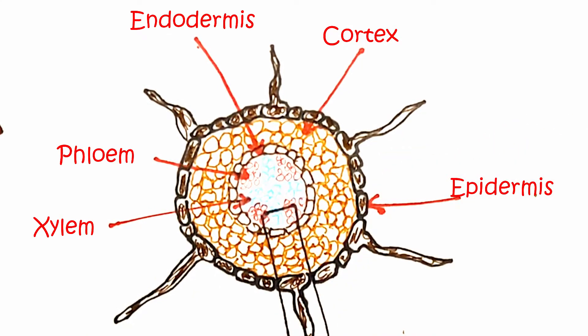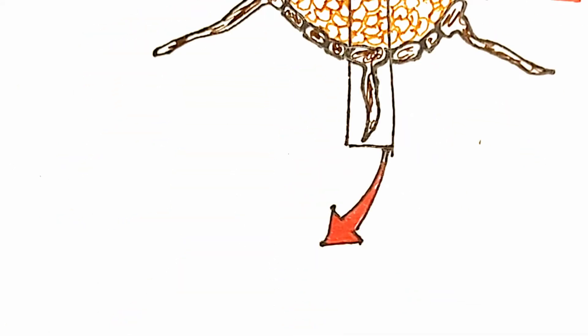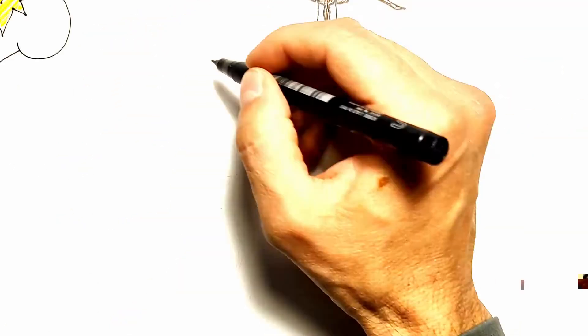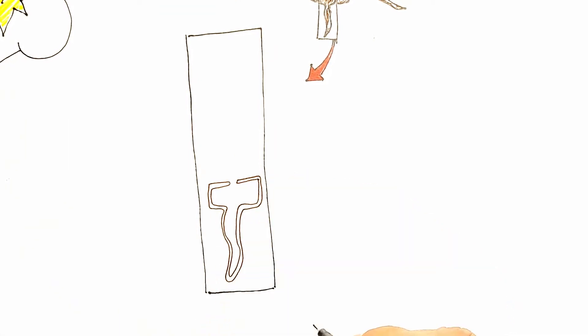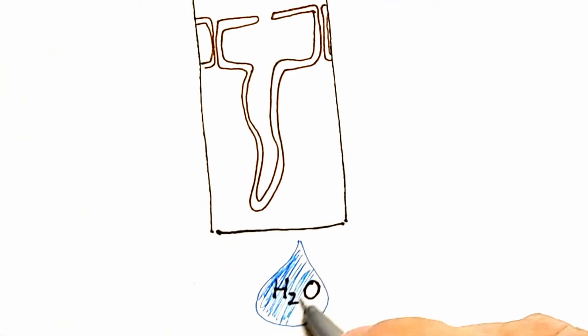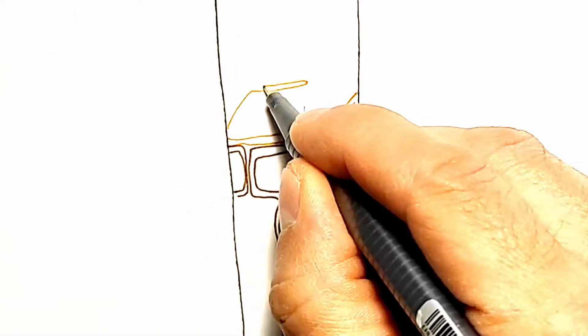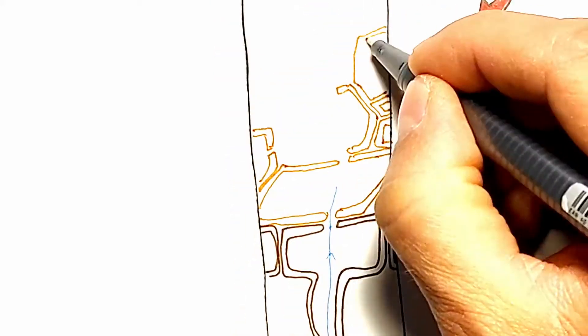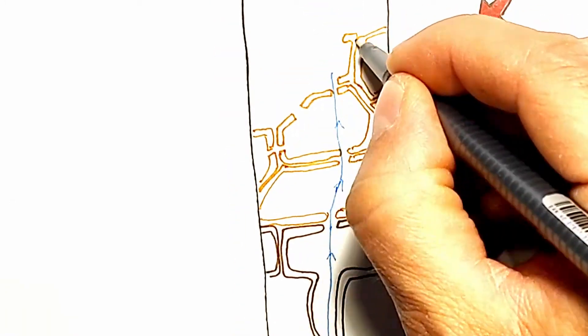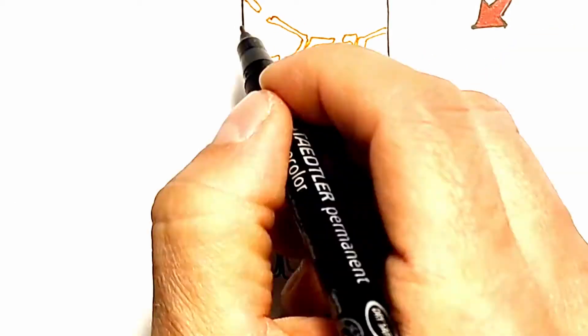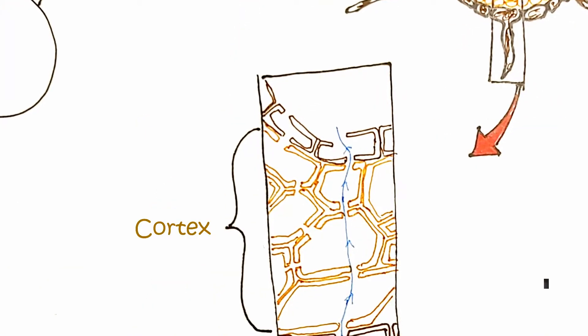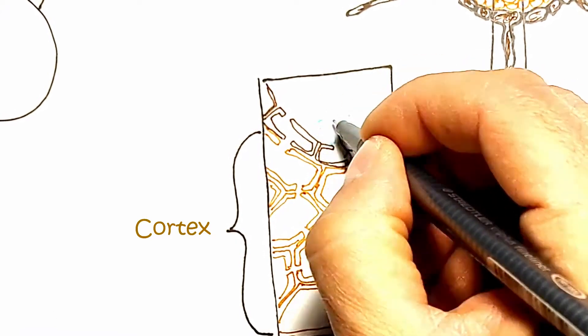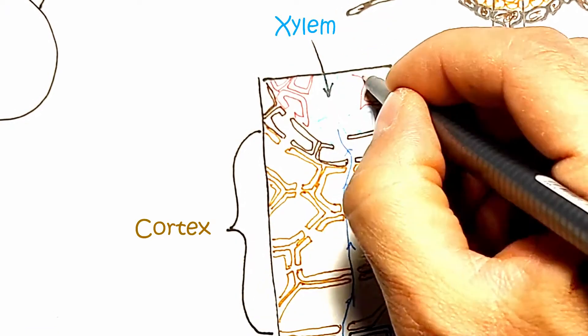The first barrier to water and dissolved minerals on the way to the xylem is the cell membrane of epidermal cells. This membrane is selectively permeable, which means that it regulates which minerals will enter the cell of the epidermis and in what quantity. After selection, water and dissolved minerals easily pass from cell to cell of the root cortex, and eventually to the cells of the xylem elements, thanks to plasmodesmata, tiny channels through the cell walls that connect the cytoplasm of neighboring cells.